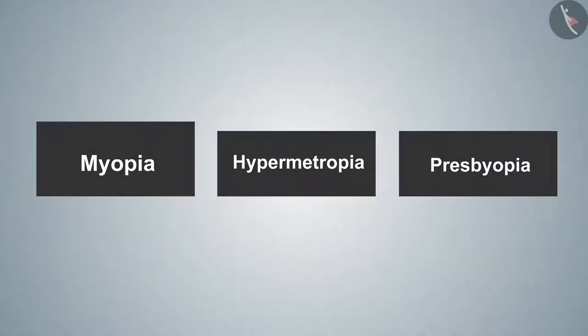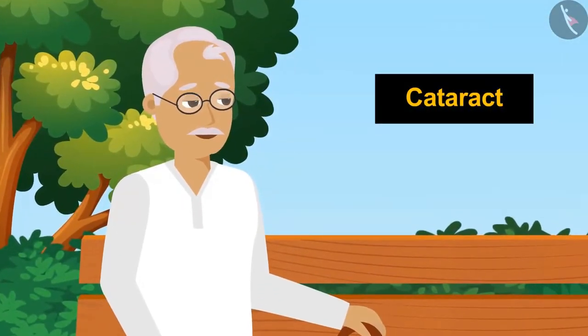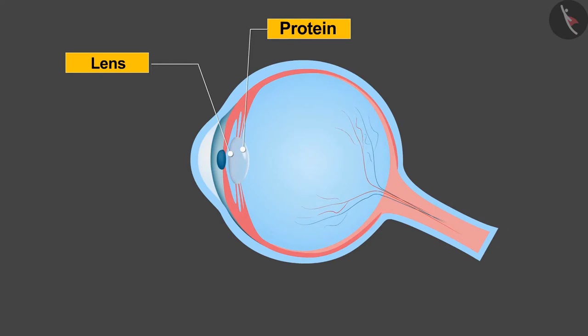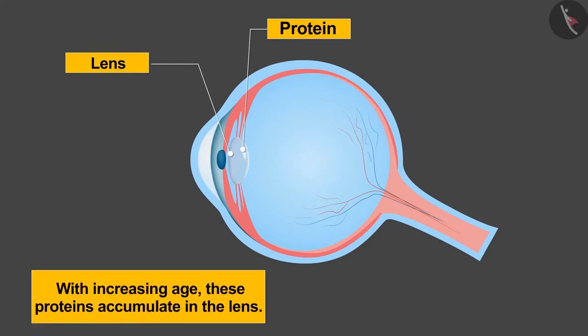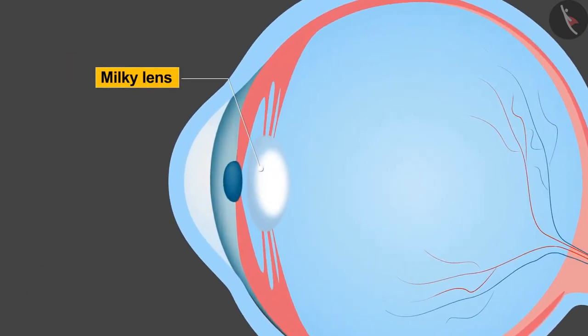Besides these three, there is another eye defect which people face during old age, known as cataract. But what exactly is cataract? We all have protein in the lens of our eyes. With increasing age, these proteins accumulate in the lens, and after a certain time the lens becomes milky in color. Due to this, the lens loses its transparency and there is difficulty in seeing.